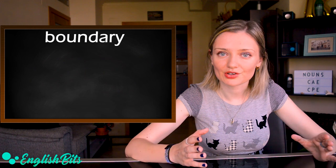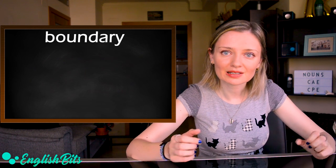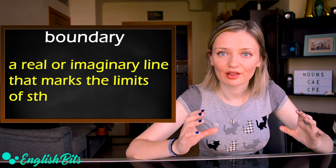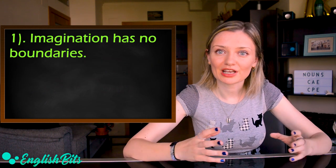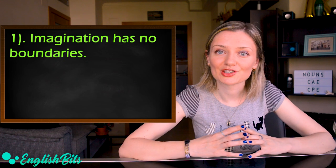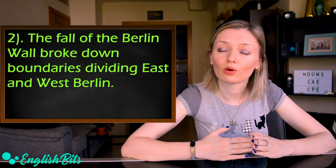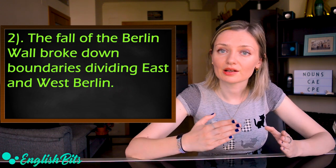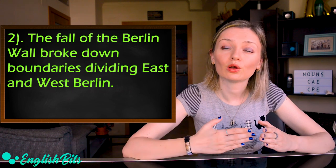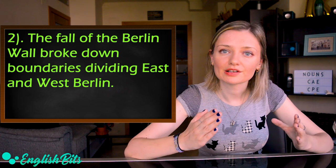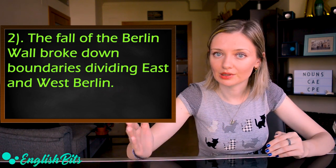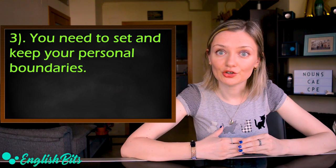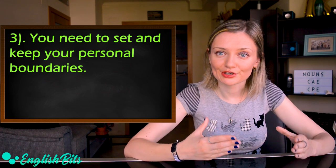Our fifth noun is 'boundary' — a real or imaginary line that marks the limits of something. Examples: Imagination has no boundaries. The fall of the Berlin Wall broke down boundaries dividing East and West Berlin. You need to set and keep your personal boundaries.